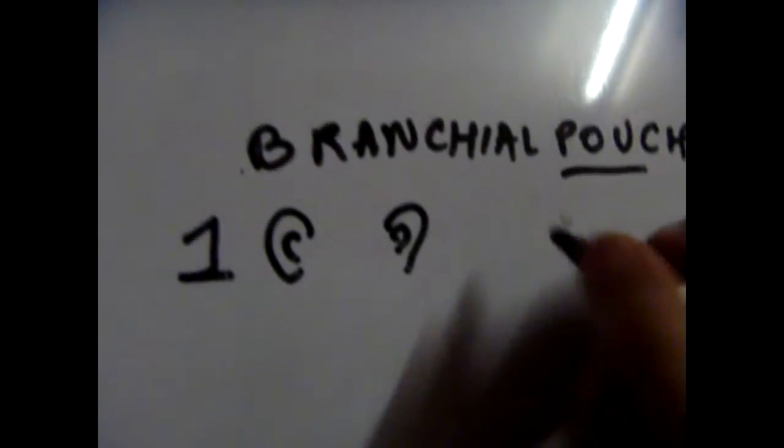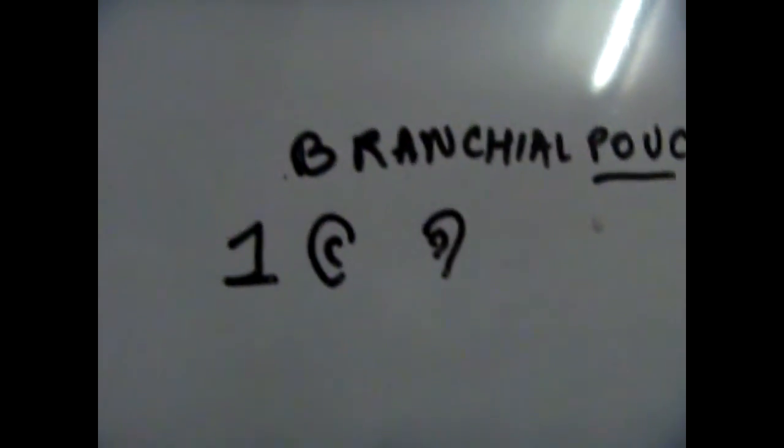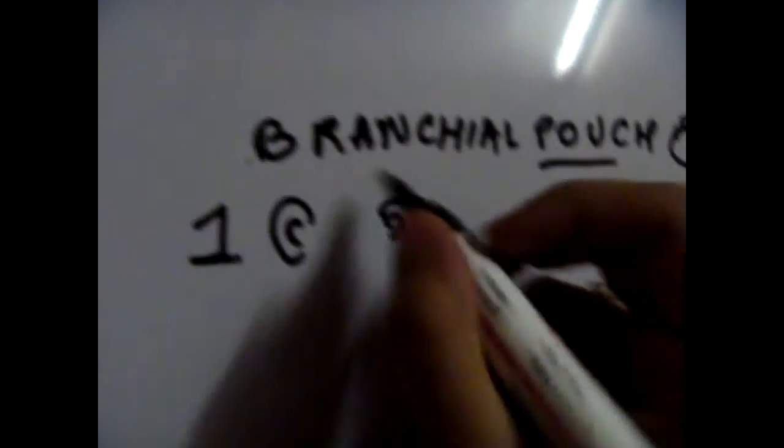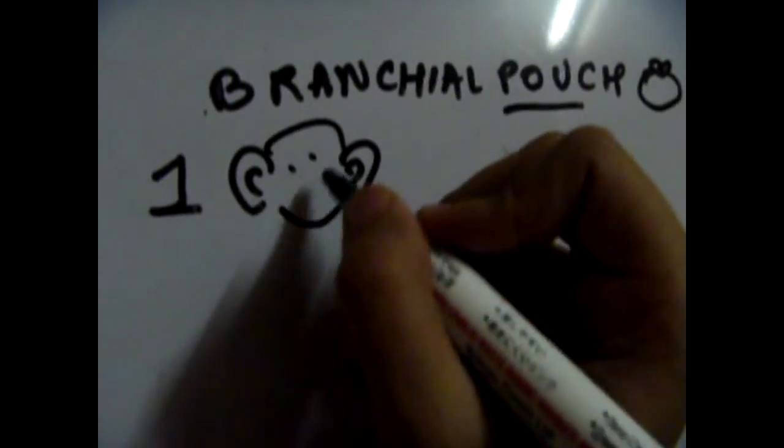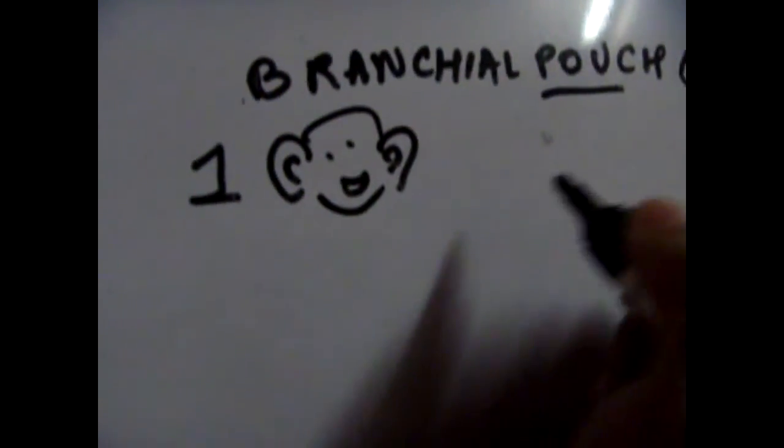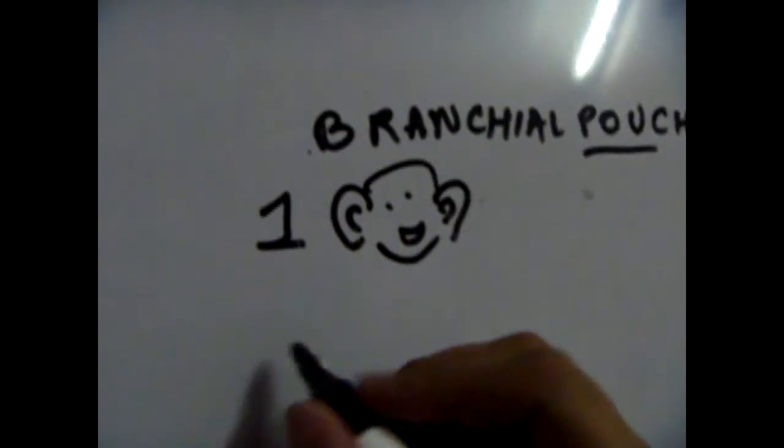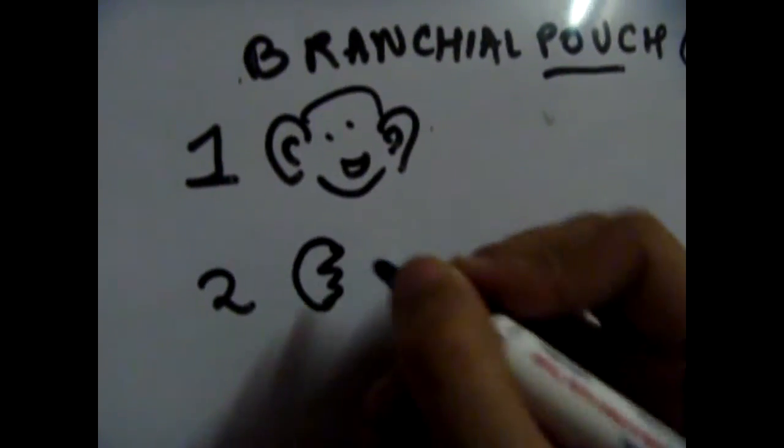The first branchial pouch gives rise to the ear. So you're going to remember middle ear cavity, eustachian tube, and the mastoid cells in your head are from the first branchial pouch.